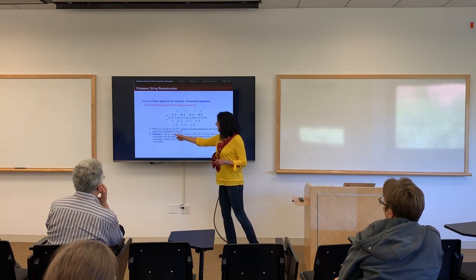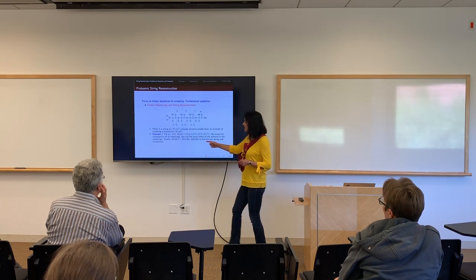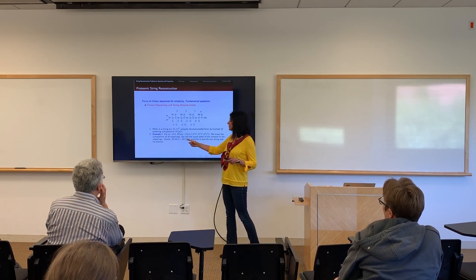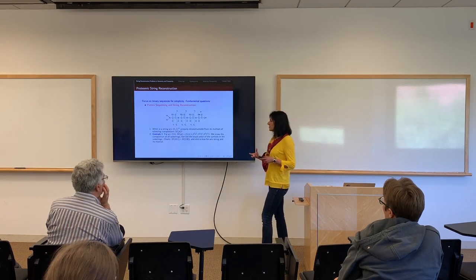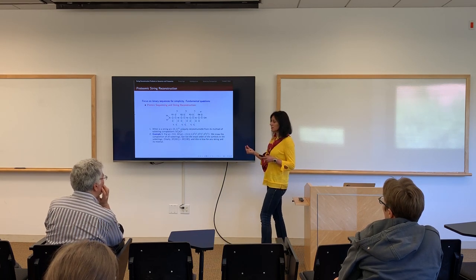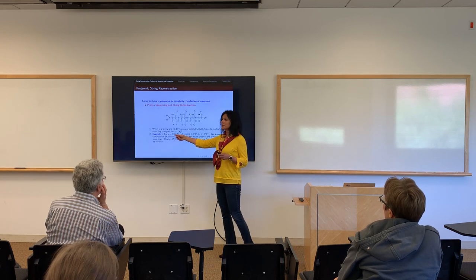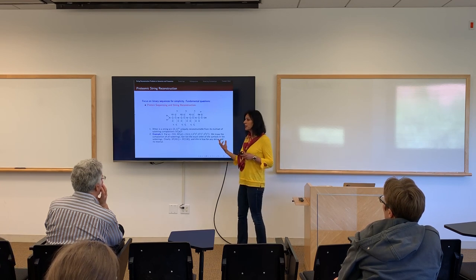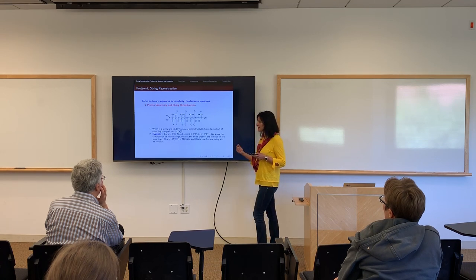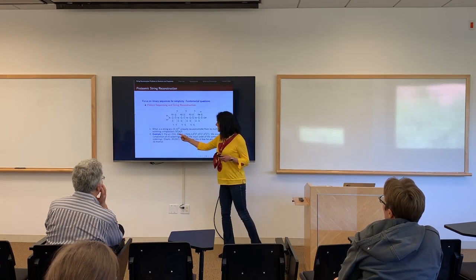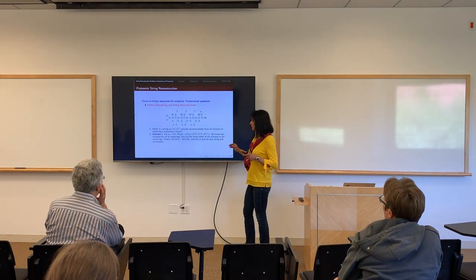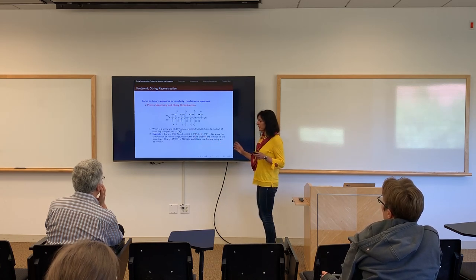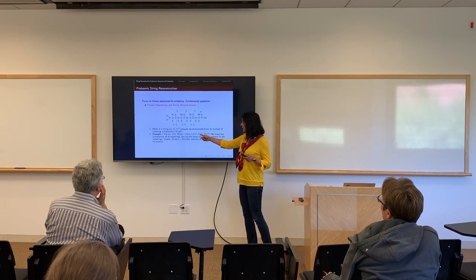I'm giving you all substrings of a given string — for example, of length 1: 0, 1, 0; of length 2: 0,1 and 1,0; of length 3: 0,1,0. But in mass spectrometry, I'm not giving you the substrings themselves — just their masses. In the binary domain, I only tell you the weight. So for the substring 0,1,0, I tell you there were two zeros and a one, but not their order. Then another fragment might have one zero and one one — but again, I don't tell you the order.